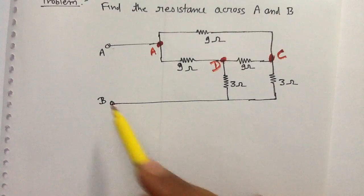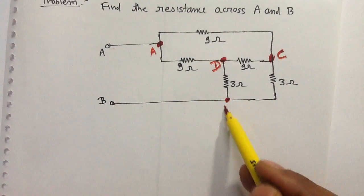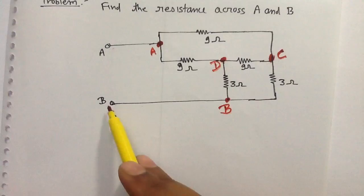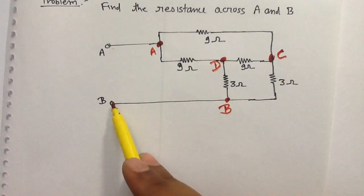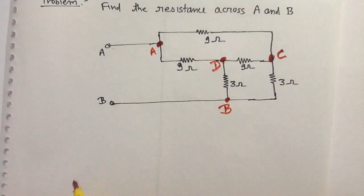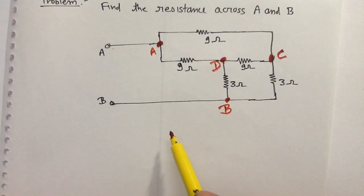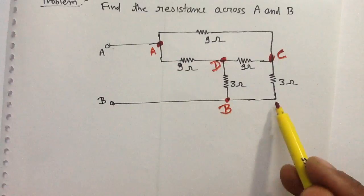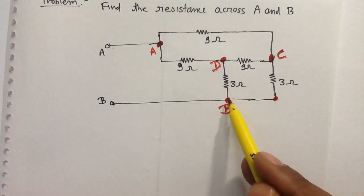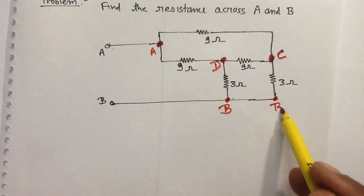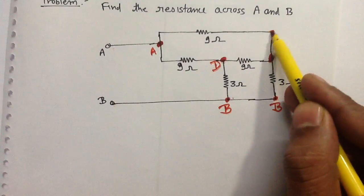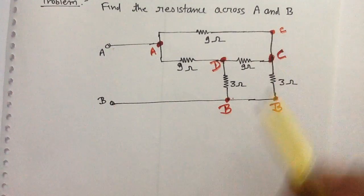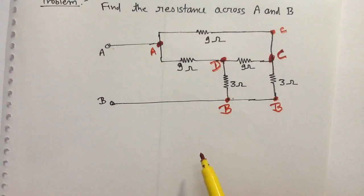This point is B. Because between these two points there is no electrical element, the potential of the two points is the same. So if this is B, then that point will also be B. If this is C, then that point will also be C, because no electrical element is present between them.